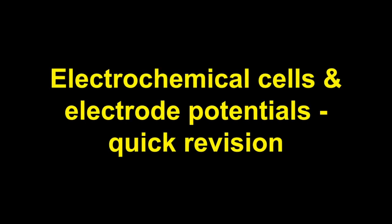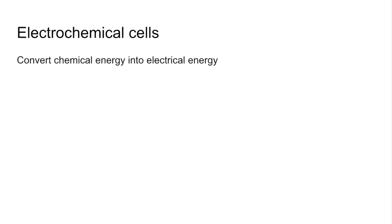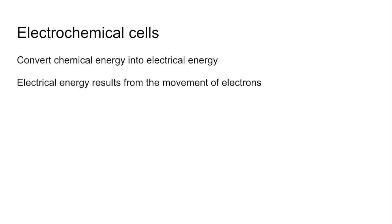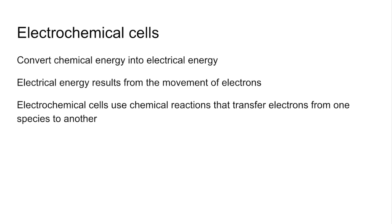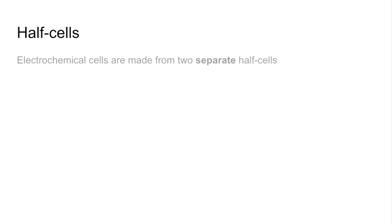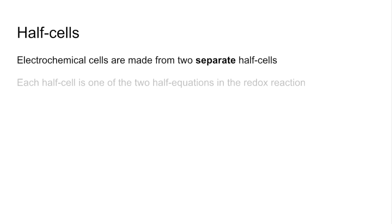This is a quick revision video on electrochemical cells and electrode potentials. Electrochemical cells convert chemical energy into electrical energy. Electrical energy results from the movement of electrons, so electrochemical cells use chemical reactions that transfer electrons from one species to another — they use redox reactions. Electrochemical cells are made from two separate half cells, and each half cell is one of the two half equations in the redox reaction.